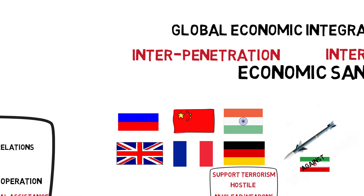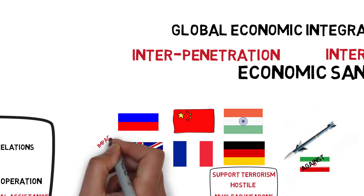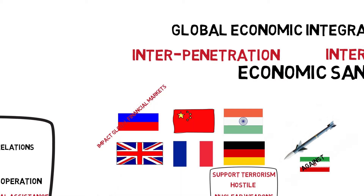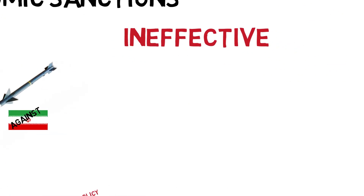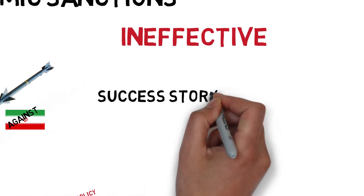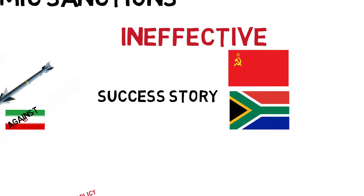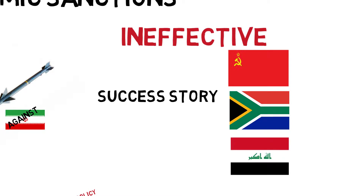But it also, at the same time, caused a huge impact on global financial markets. Even in the so-called success stories of economic sanctions, such as the Soviet Union's collapse, the elimination of apartheid in South Africa, and the demise of the Iraqi dictatorship, there was arguably much weight added from factors beyond economic sanctions.